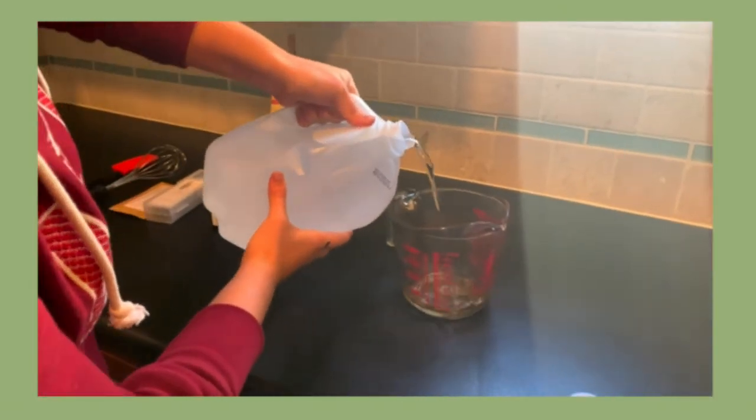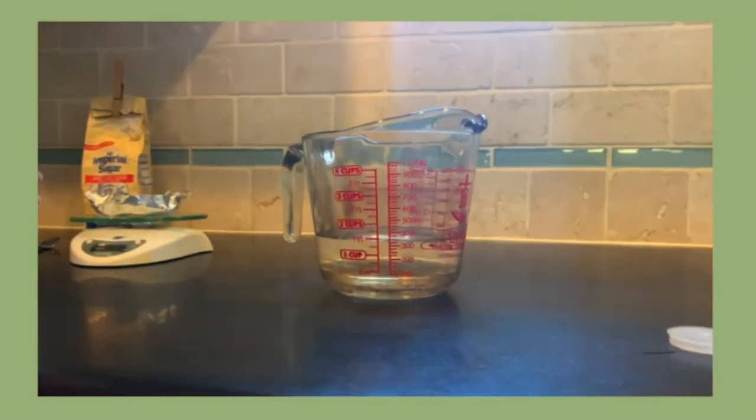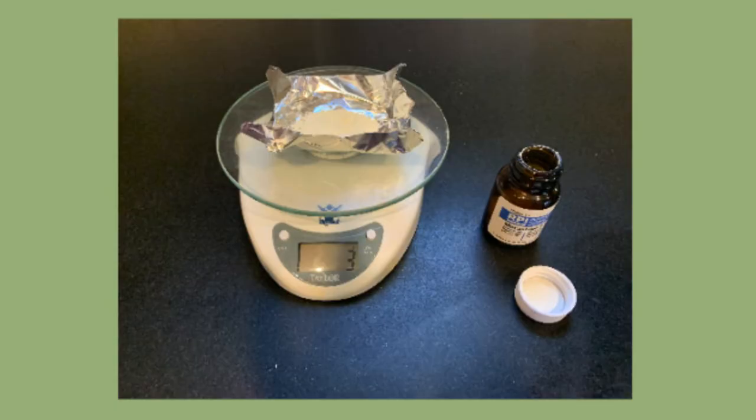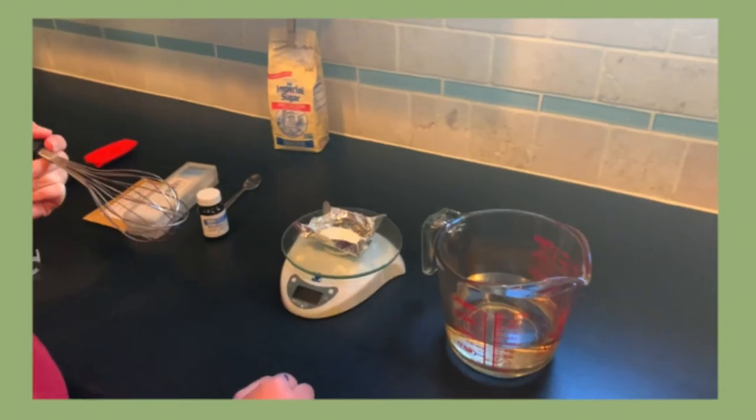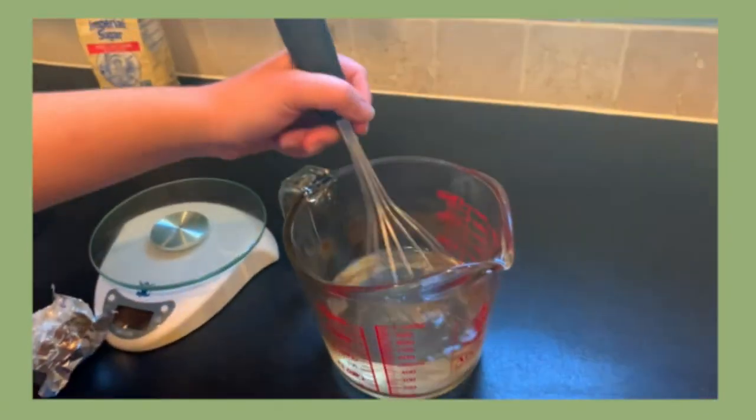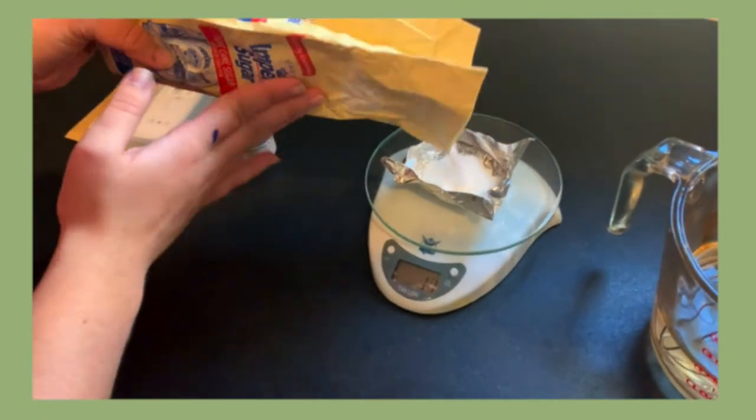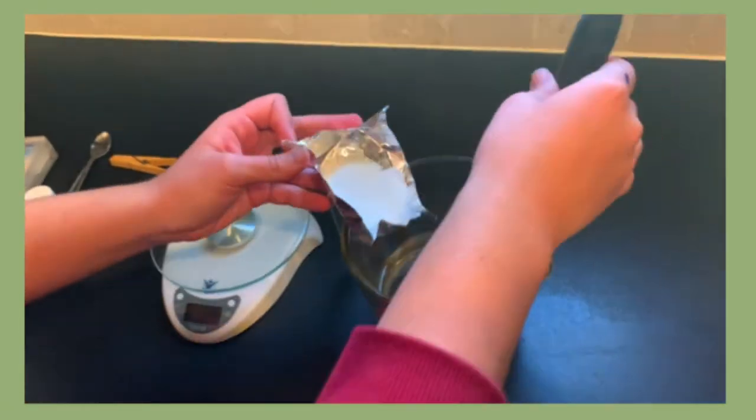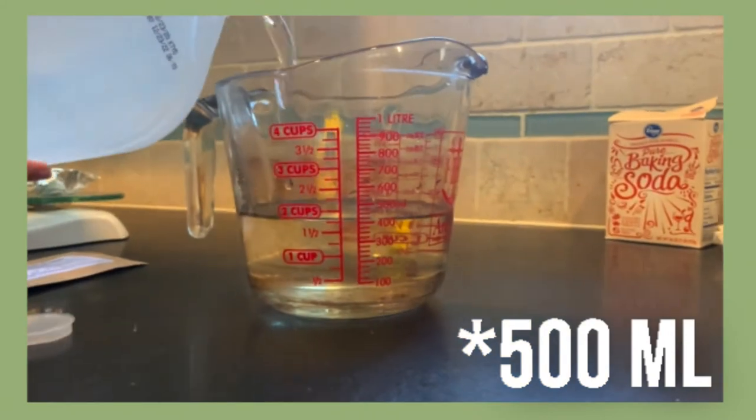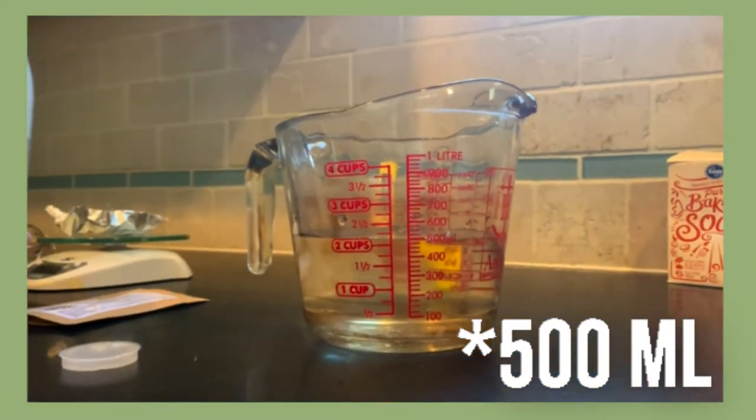You should make the medium in the 1 liter container. Pour 400 milliliters of distilled water into the container. Measure 3 grams of the MS medium using an aluminum foil weigh boat and the kitchen scale. Pour the powdered medium into the water and whisk until fully incorporated. Measure 15 grams of sugar. Whisk the sugar into the mixture until fully incorporated. Add distilled water to the mixture until 500 milliliters is reached.